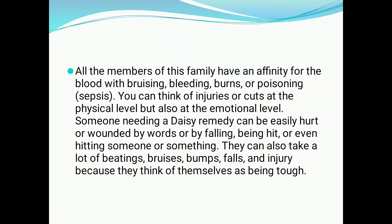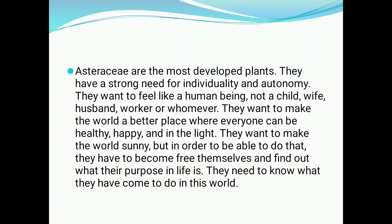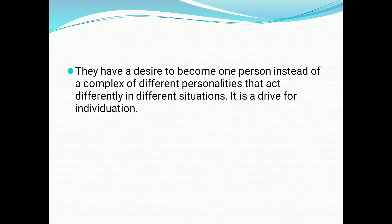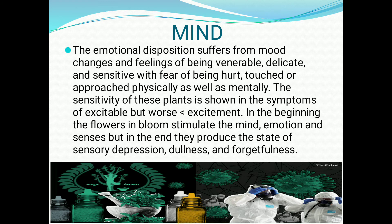Key remedies include Arnica. Injuries can occur at the physical level but also at the emotional level. Someone needing a Composite family remedy can be easily hurt or wounded by words, or by falling, being hit, or even hitting someone. They can also take a lot of beating, bruises, bumps, falls, and injury because they think of themselves as tough. They have a desire to be one integrated person rather than showing different personalities in different situations — this is called a drive for individuation. Identity crisis is one of the core themes of the Composite family.